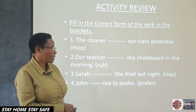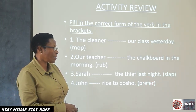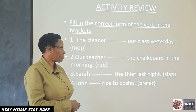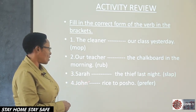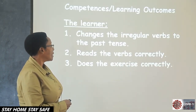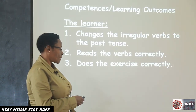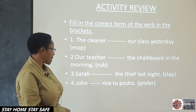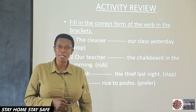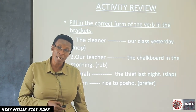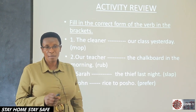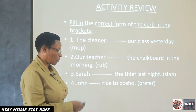Number four: 'John dash rice to posho.' The word in bracket is 'prefer.' We double the R, we add E-D, and the word becomes 'preferred.' John preferred rice to posho. Those were the few numbers that I gave you — only four.